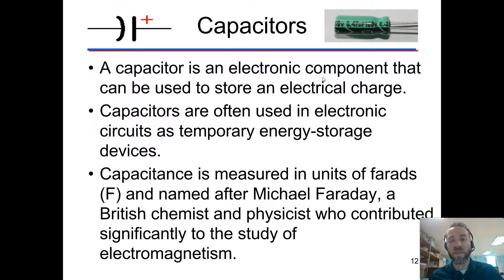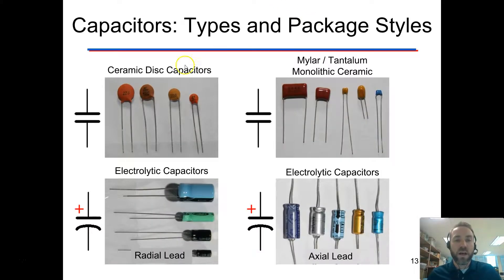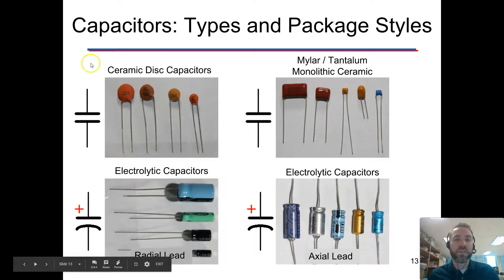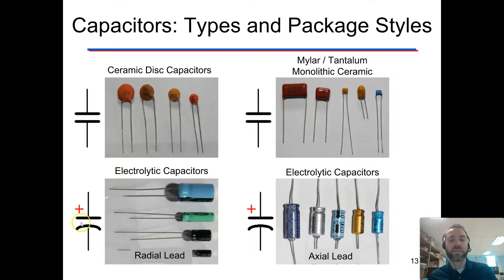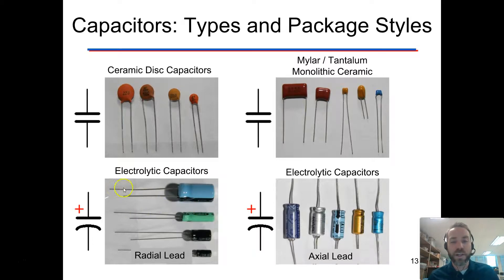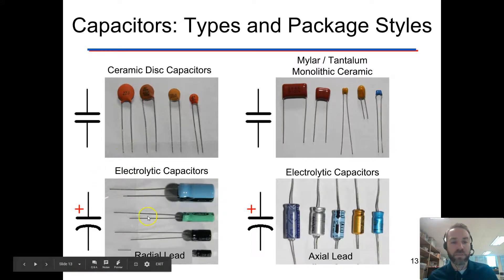We're going to take a look at some capacitors. Those use farads as their units. You'll see pretty much all of these throughout the year. The top row is ceramic disc capacitors, and the flow of electricity doesn't matter through those — there's no positive or negative side. They have a symbol that looks kind of like the battery symbol, because they're very related. Then we have electrolytic capacitors — those do care about the flow of electricity, and they're generally labeled. You've got a long leg that's your positive end and a short leg for your negative end. There's also a stripe on the negative side of this type of capacitor.